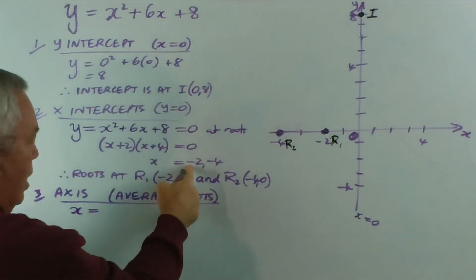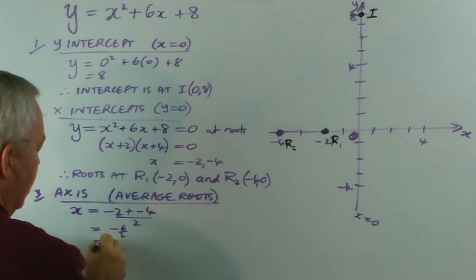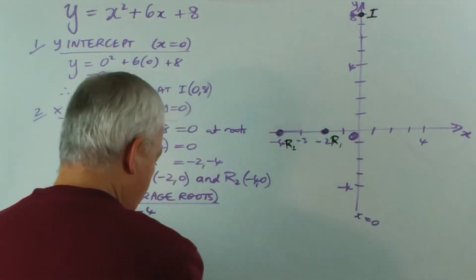So we average the roots to find the midpoint. So, x equals—here are our two roots—minus two and minus four over two, which is minus six over two, which is minus three. So at x equals minus three, we can draw our axis.